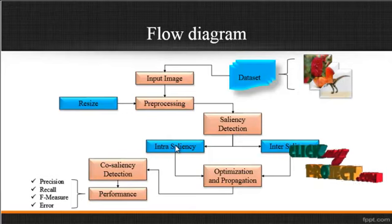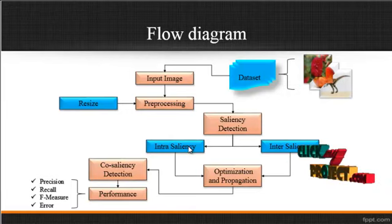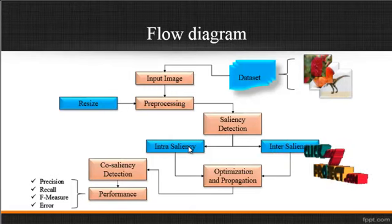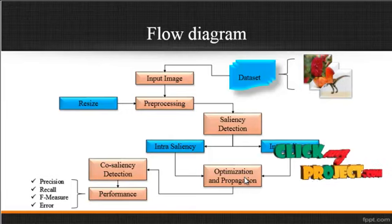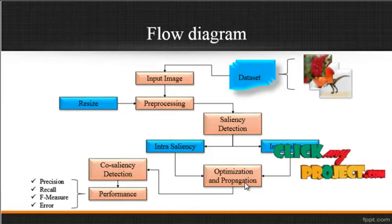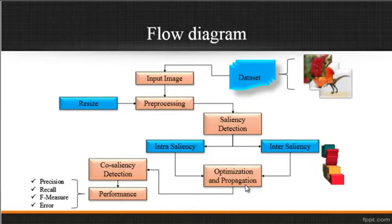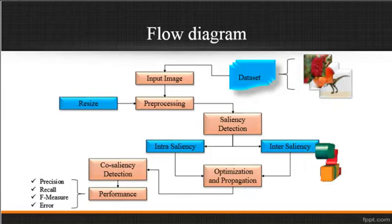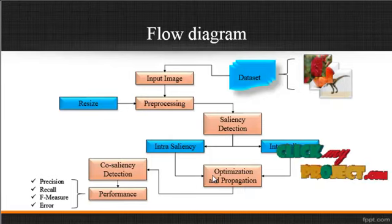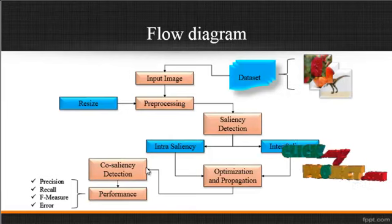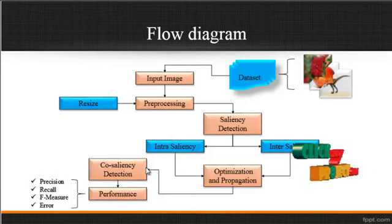The first one is the intra-saliency map and the second one is the inter-saliency map. The inter-saliency and the intra-saliency are somewhat similar to each other. After getting the inter-saliency and intra-saliency result, the optimization and propagation is carried out. In this step, we use the fusion result and extract some features from the inter- and intra-saliency map. By using those features, we optimize them as a corresponding limit, then the co-saliency map is generated.